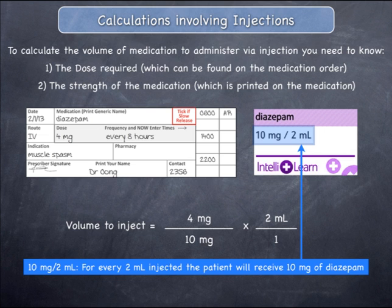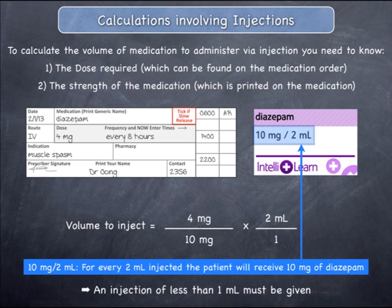Before actually calculating the volume to administer, it is good practice to estimate the answer. You can do this by considering the dose required and the concentration of medication. 10 milligrams in two mils is equivalent to 5 milligrams of diazepam in every one mil of solution. In other words, if you were to administer one mil, the patient would receive exactly 5 milligrams of diazepam. For this order, the patient must receive 4 milligrams of diazepam, and therefore you know that you must inject less than 1 mil.